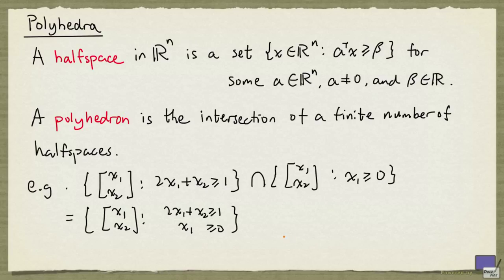We are now going to show that polyhedra are convex. Notice that it is sufficient to show that half-spaces are convex because a polyhedron is the intersection of a finite number of half-spaces. And so if half-spaces are convex, then the intersection is also convex.